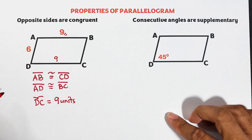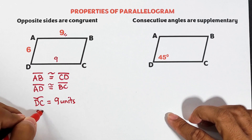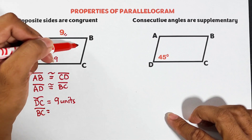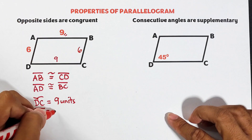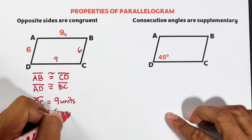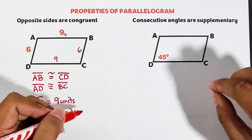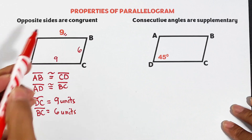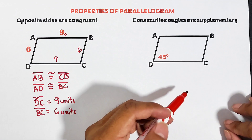This side is also 9 units. Now what about BC? Since BC is parallel to side AD, this one is also 6 units. Now we are good with opposite sides that are congruent. Let's go with the second property.